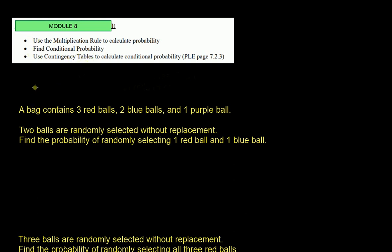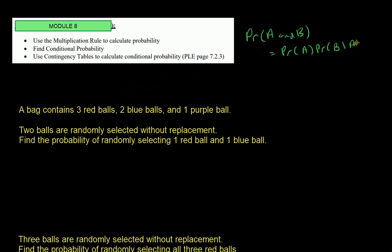Let's go through this list. Using the multiplication rule — the probability of event A and B equals the probability of event A times the probability of event B given that A already happened. That's why it's called the multiplication rule, because you're multiplying these probabilities together.